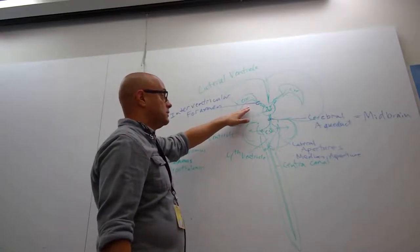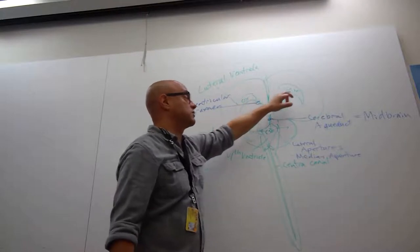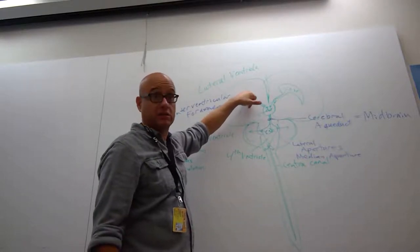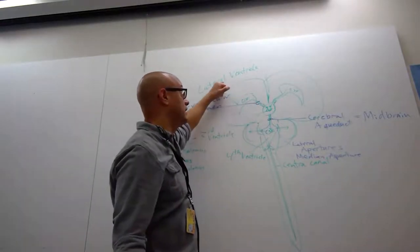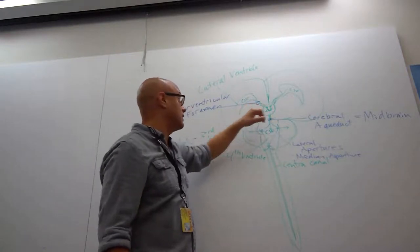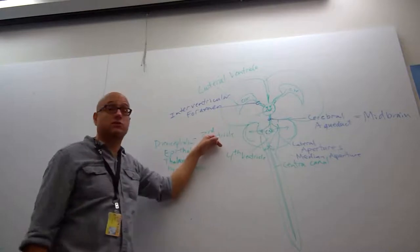So these tubes, these spaces are going to generate cerebrospinal fluid because they have ependymal cells and choroid plexuses, and that's what makes cerebrospinal fluid. So that cerebrospinal fluid will enter into left and right lateral ventricles and they'll drain through the interventricular foramen into the third ventricle. Everybody follow?